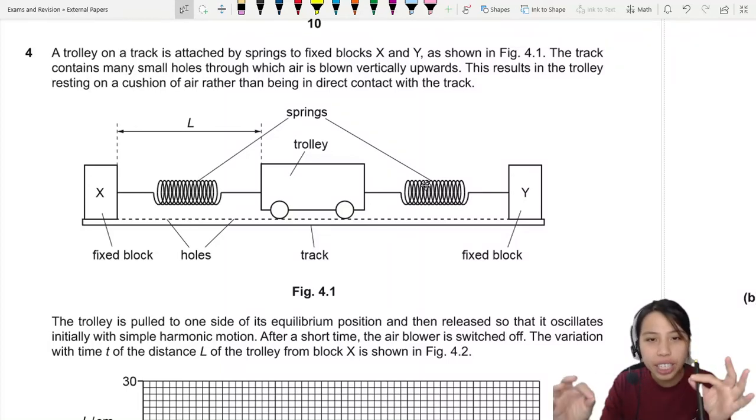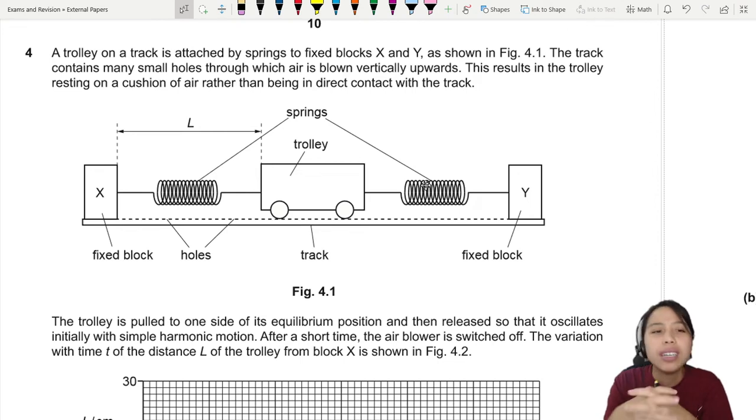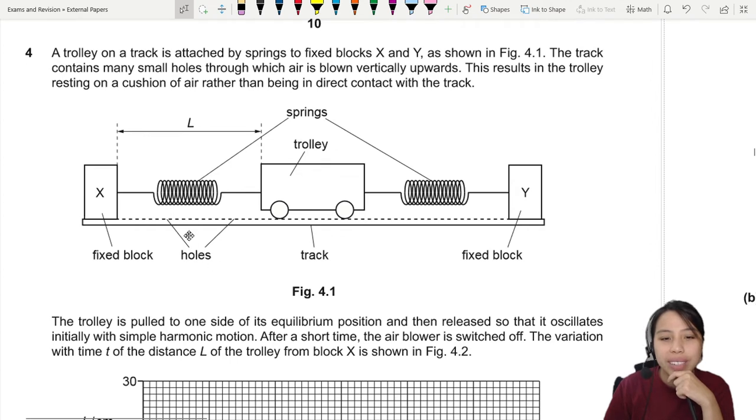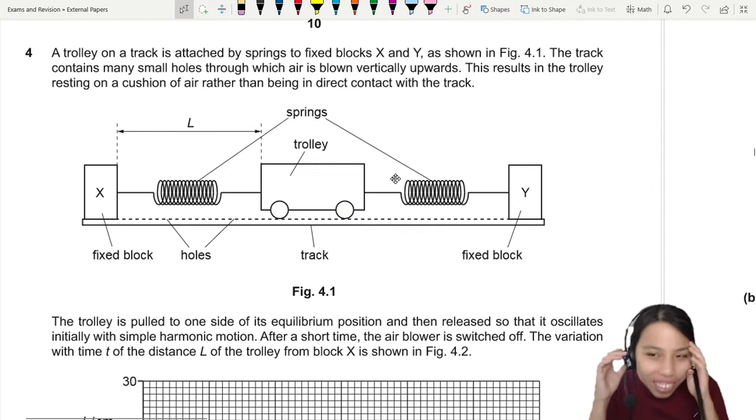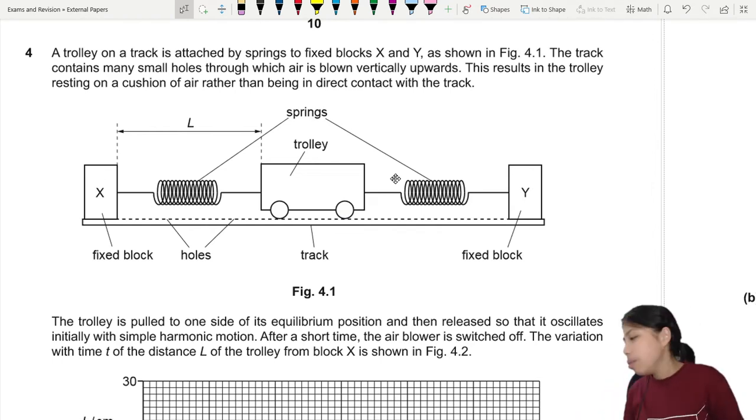A trolley on the track is attached by springs to fixed blocks X and Y as shown in the figure. The track may contain many small holes through which air is blown vertically upwards, so imagine all these holes going. The trolley is partially floating on the track, which is great - no friction. This results in the trolley resting on a cushion of air rather than being in direct contact with the track, so no friction acting on the trolley.